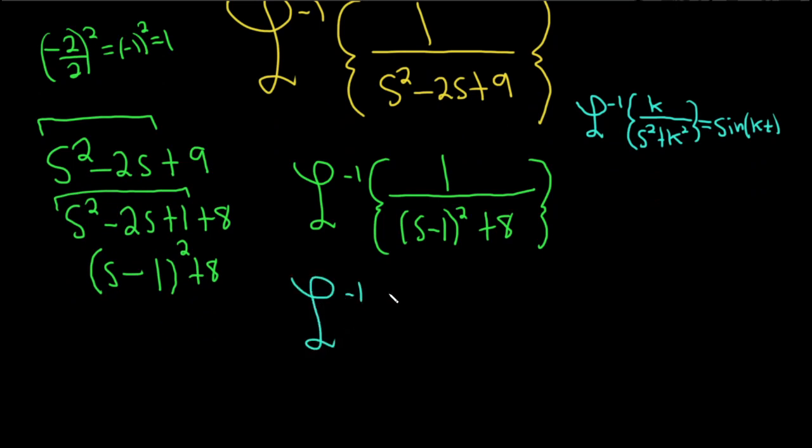This will be 1 over s squared plus... I'm going to write the 8 in a nice way. We want to write it as something squared, so let's write it as the square root of 8 squared. Our shift is from s to s minus 1.